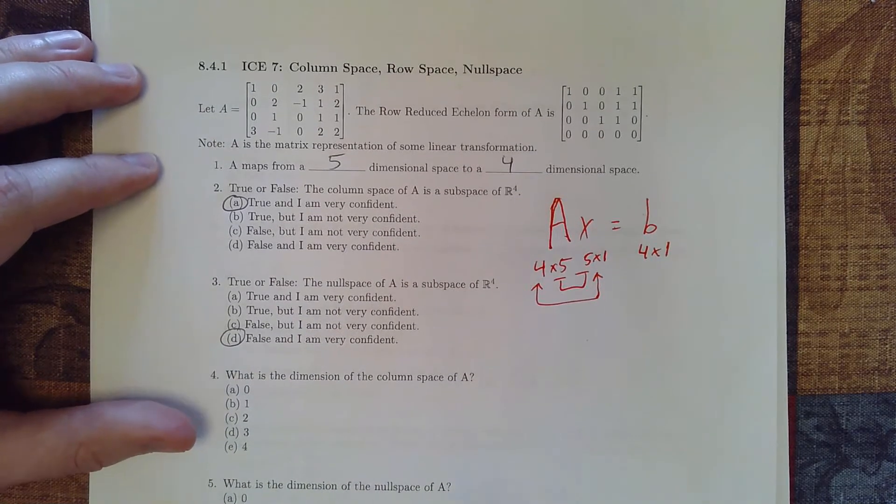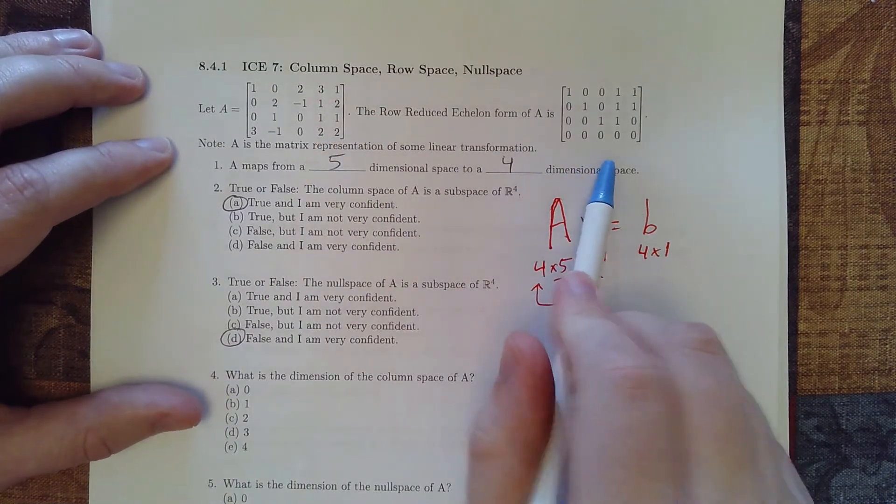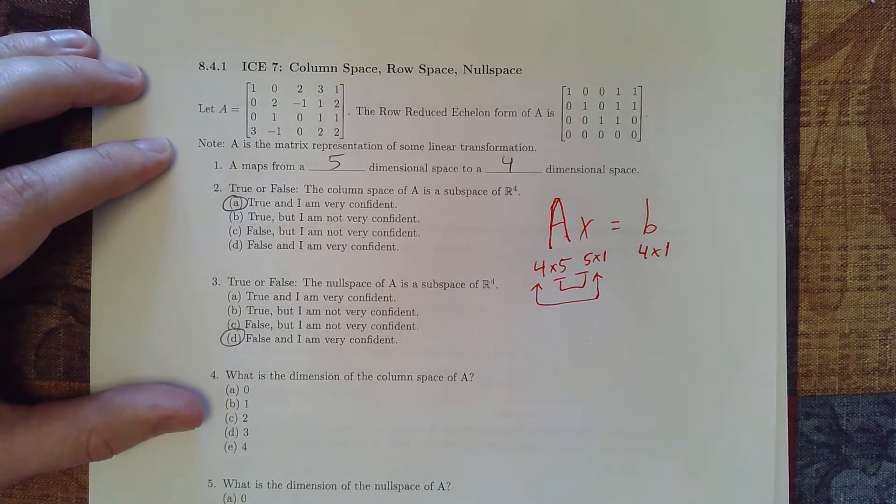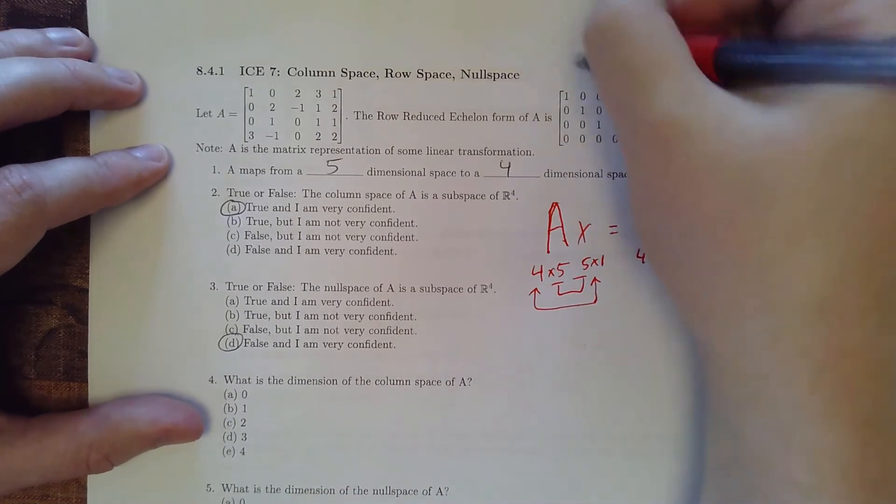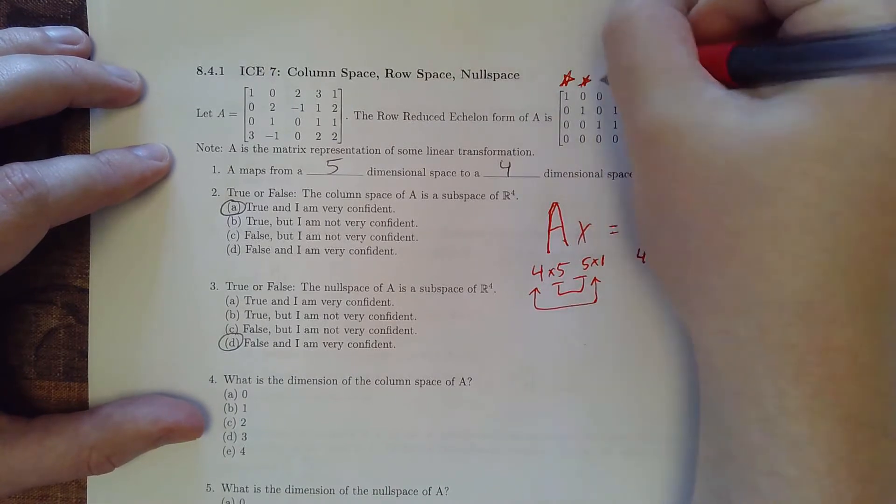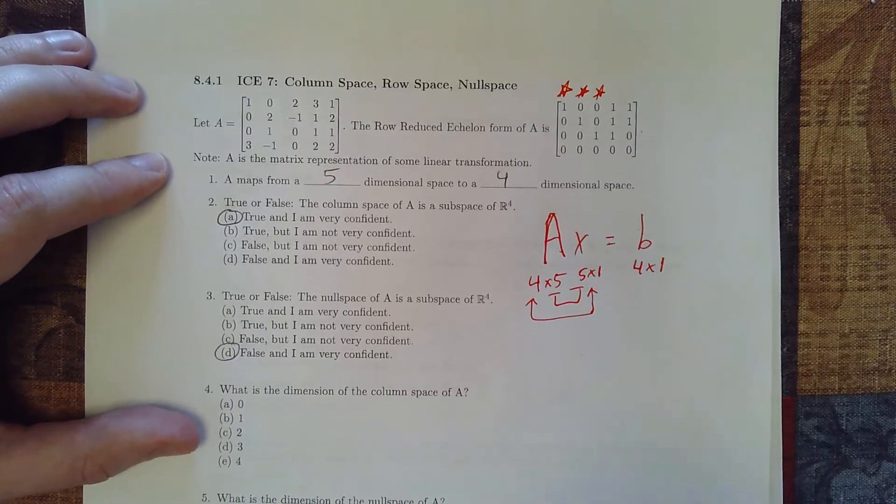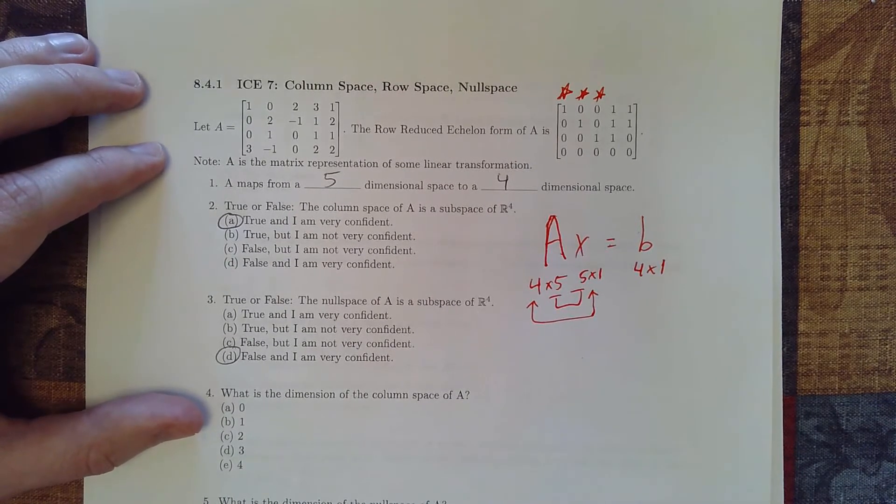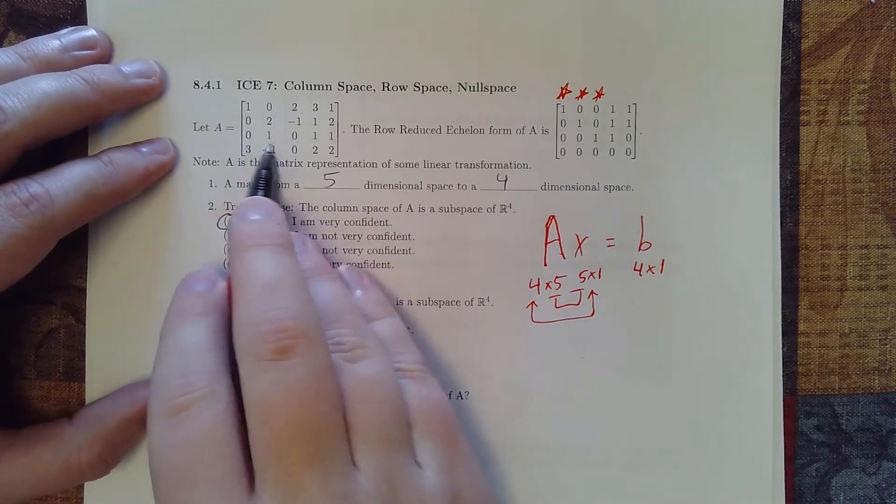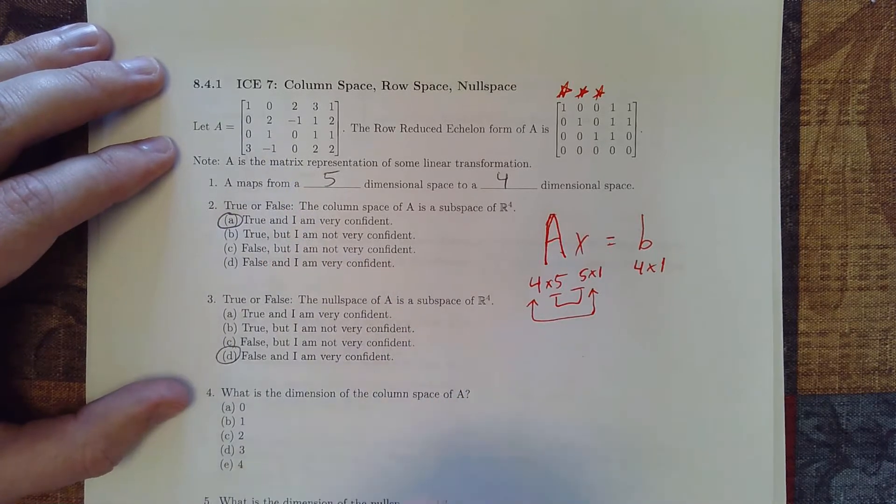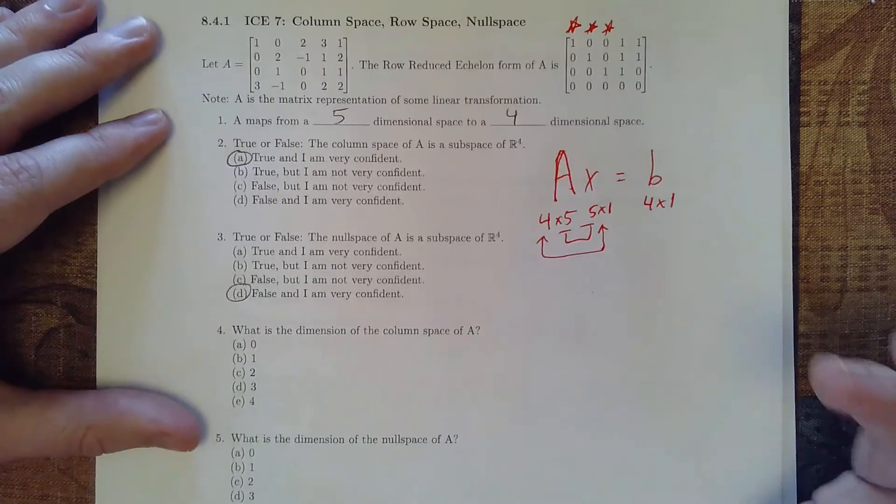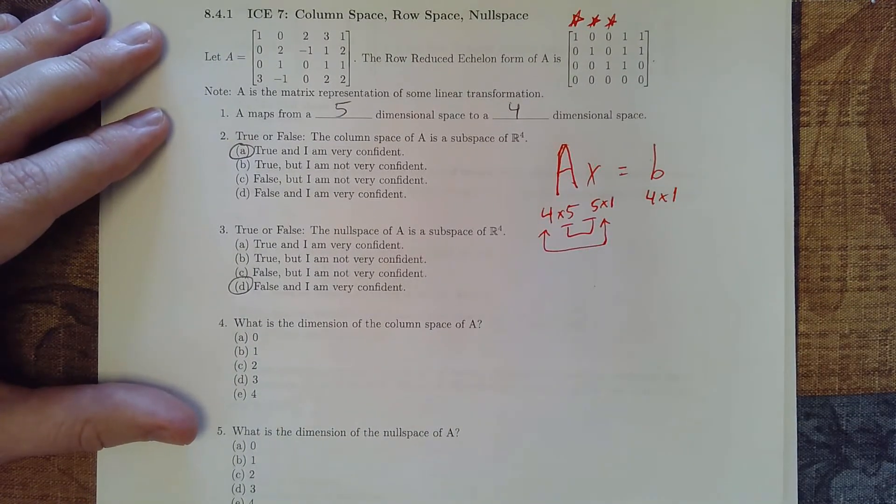Now we want to go ahead and use the matrix and its reduced row echelon form to find the dimension of the column space and the null space. So for the column space, the columns with leading ones are going to tell us what our vectors is to form our spanning set for our basis for the column space. So here, since we have three leading ones, the dimension of the column space is going to be three.